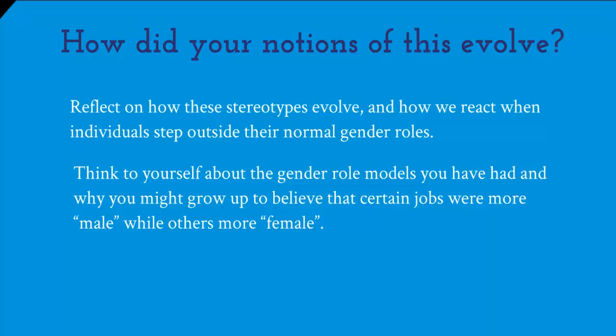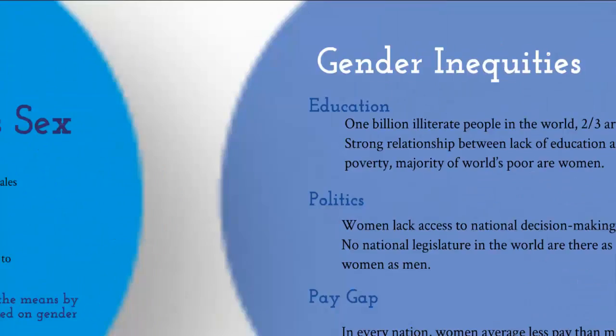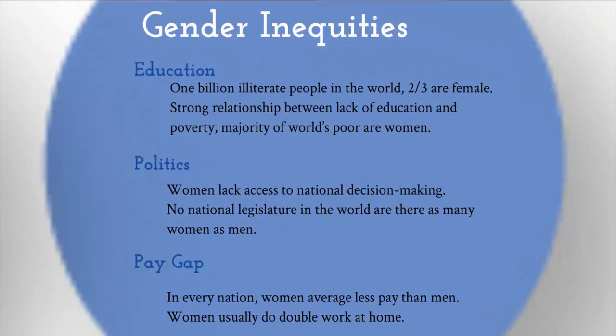Reflect on how these stereotypes evolve and how we react when individuals step outside their normal gender roles. There still exist in the world many gender inequities. Global inequities occur in education — out of one billion illiterate people in the world, two-thirds are female, and there is a strong relationship between lack of education and poverty, and the majority of the world's poor are women. In politics, women generally lack access to national decision-making, and there is no national legislature in the world where there are as many women as there are men. And in the pay gap, in every nation, women tend to earn less than men even for the same jobs, and often do double work at home as they are assigned traditional roles such as childcare.